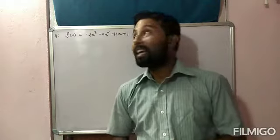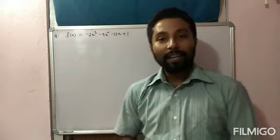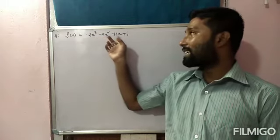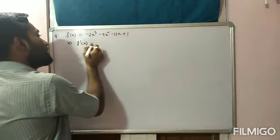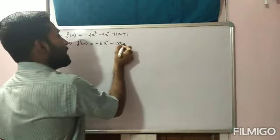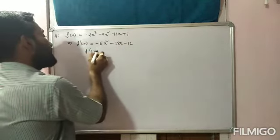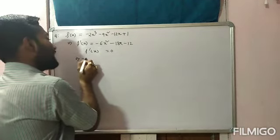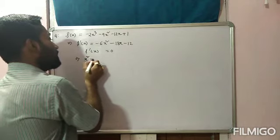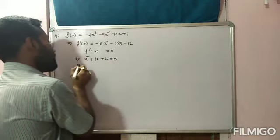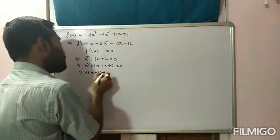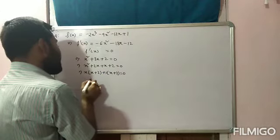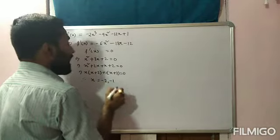Example 2: Find the intervals in which f(x) = -2x³ - 9x² - 12x + 1 is strictly increasing and strictly decreasing. Find f'(x) = -6x² - 18x - 12. Put f'(x) = 0; taking -6 as common gives x² + 3x + 2 = 0. Factoring: (x + 2)(x + 1) = 0, so the values of x are -2 and -1.